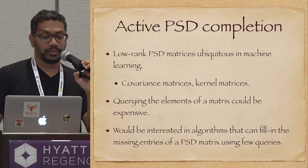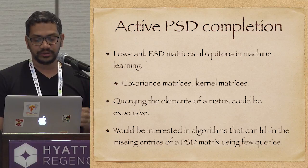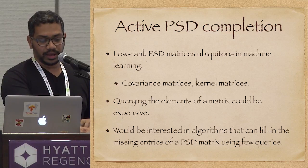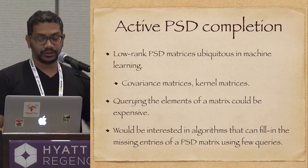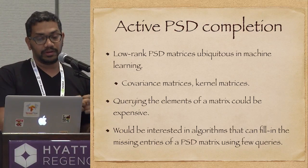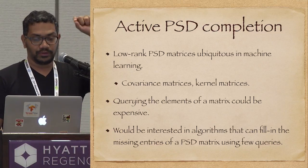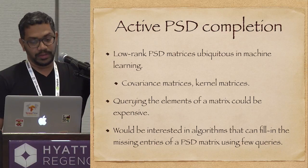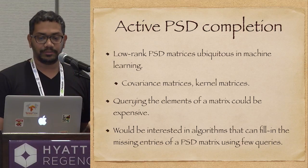Let's start with the first problem, which is active positive semidefinite matrix completion. Low-rank positive semidefinite matrices are ubiquitous in machine learning — whenever we use covariance matrices or kernel machines, we essentially end up working with them. Querying the elements of the matrix in certain cases could be very expensive, so it would be interesting to have algorithms that can fill in few elements: you explicitly compute few entries of the kernel matrix, and then using those few elements, complete the rest of the matrix.